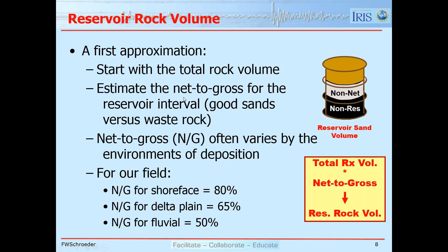The next step is figuring out, of that total volume, how much is reservoir quality rock. We estimate the net-to-gross for the reservoir. The 'net' is the good sands; the rest is poor-quality sands, silts, shales, or other non-reservoir lithology. Net-to-gross often varies by depositional environment. For the Barracuda Field, we have three environments: shoreface sands with a net-to-gross of 80%, delta plain sands at 65%, and fluvial sands at 50%.